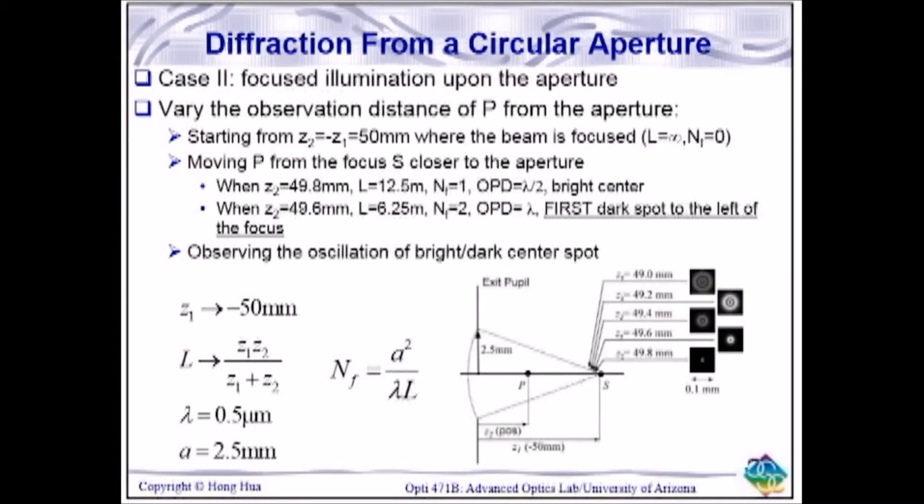We determined the best focus of a lens with a circular aperture combination experimentally by observing the diffraction. Using the equation shown, the distance z1 or the distance from the source to the aperture lens combination becomes the focal length of the lens, which in our case was 1000mm. The quantity z1 is negative due to convention.